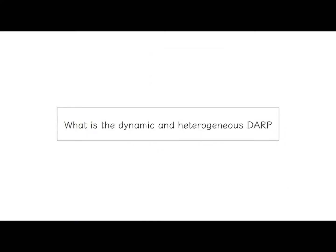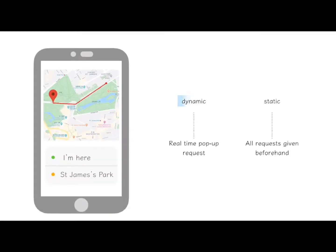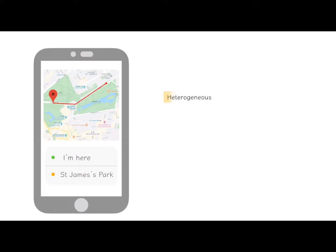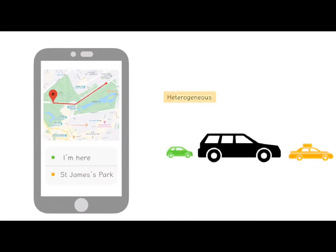But what do these terms stand for? We call it dynamic because the system continuously generates pop-up requests from passengers and plans a new schedule each time. It also repeatedly receives requests, computes schedules, sends feedback, and follows the schedule. And for the term heterogeneous, it generally means that the system involves different types of vehicles that can be selected based on order situations. For example, we may have ambulances and vehicles for wheelchair users in the system.